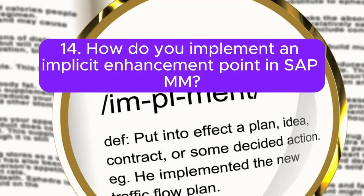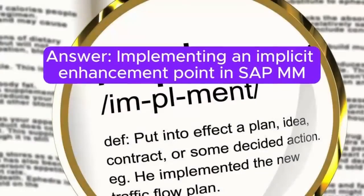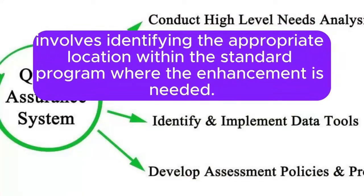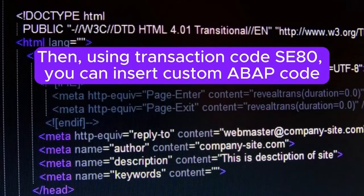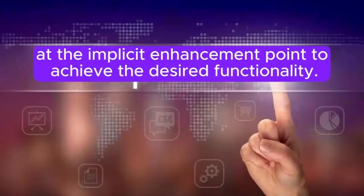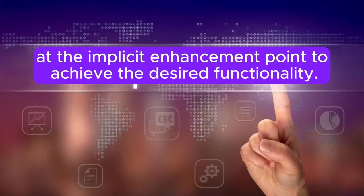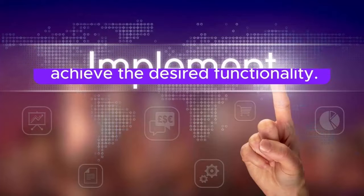How do you implement an implicit enhancement point in SAP MM? Implementing an implicit enhancement point in SAP MM involves identifying the appropriate location within the standard program where the enhancement is needed. Then, using transaction code SE80, you can insert custom ABAP code at the implicit enhancement point to achieve the desired functionality.